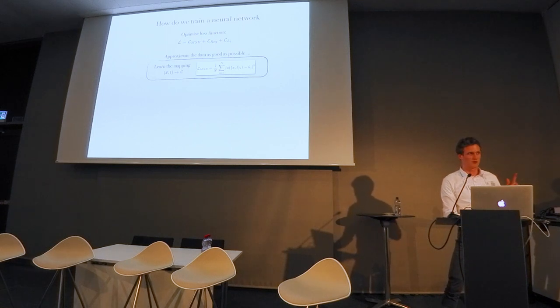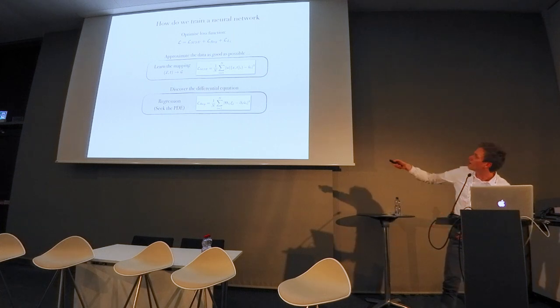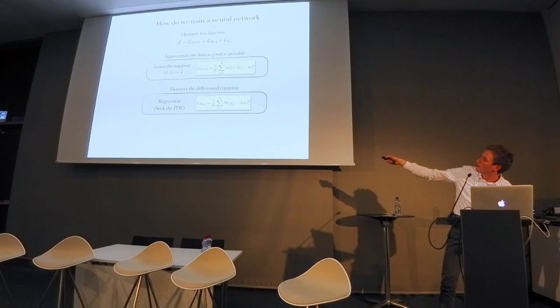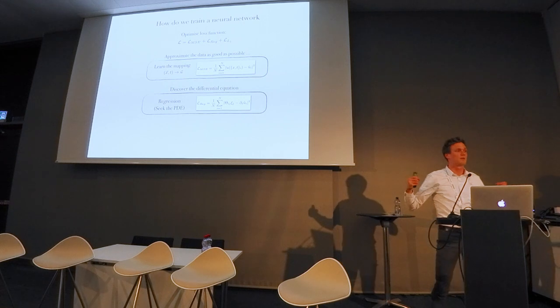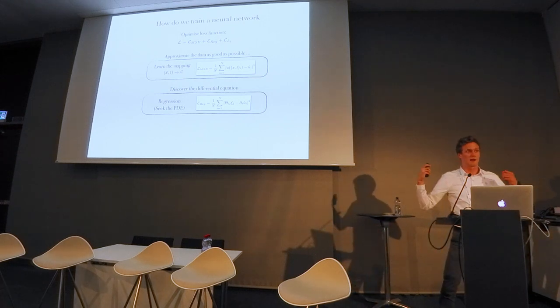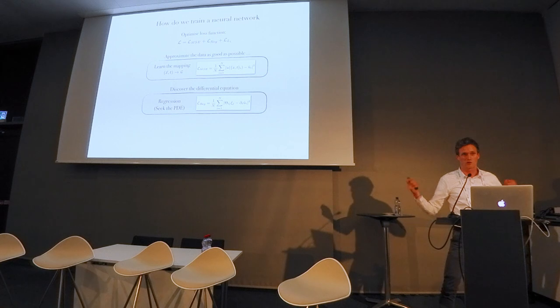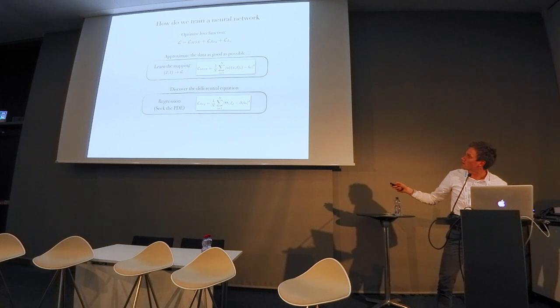The second term is the regression term. We try to optimize theta times xi minus temporal derivative of u hat, of the inferred solution. This vector xi is a coefficient vector, so this is what we try to optimize for. We try to optimize all the weights within our neural network to learn the mapping x,t to u, and at the same time we're trying to optimize this vector xi.